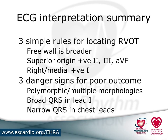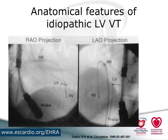My three simple rules for locating the RVOT origin: free wall is broader and tends to have a notch in the inferior leads; the more superior the origin, the more positive the inferior leads (closer to pulmonary outflow tract); and the more rightward or medial, the more positive lead one. The three danger signs for poor outcome are polymorphic or multiple ECG morphologies, a broad QRS in lead one, and narrow QRS in the chest leads.